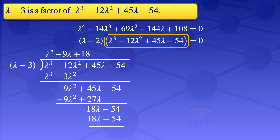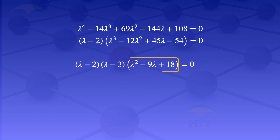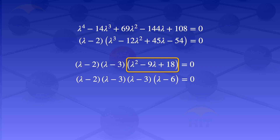So λ³ - 12λ² + 45λ - 54 factors as (λ - 3)(λ² - 9λ + 18). Our equation becomes (λ - 2)(λ - 3)(λ² - 9λ + 18) = 0. For the quadratic λ² - 9λ + 18, we find two numbers that multiply to 18 and add to -9, which are -3 and -6. So λ² - 9λ + 18 = (λ - 3)(λ - 6). The full equation becomes (λ - 2)(λ - 3)(λ - 3)(λ - 6) = 0.